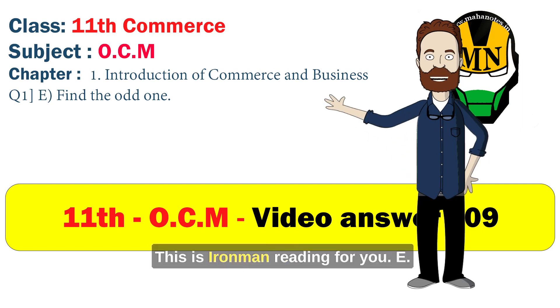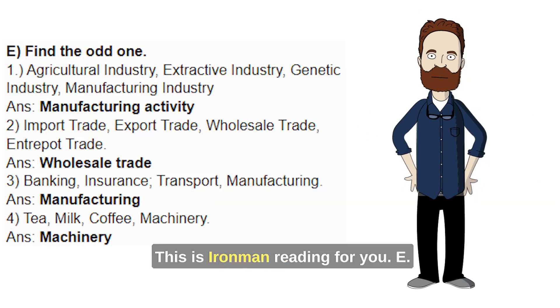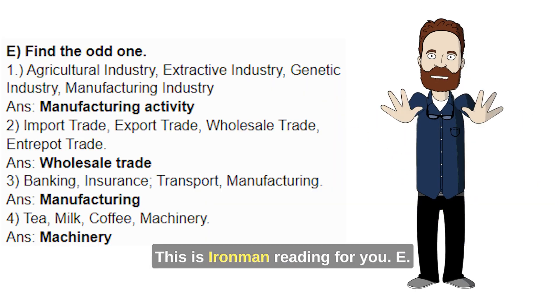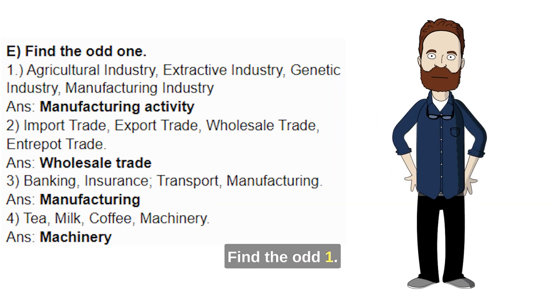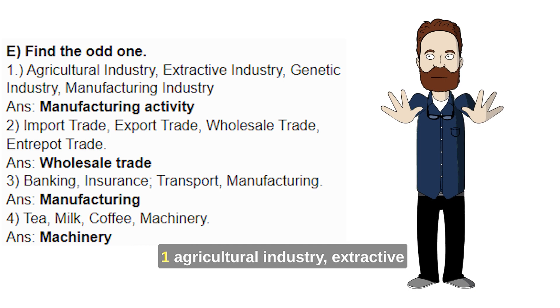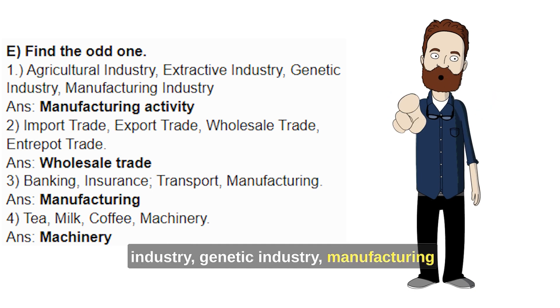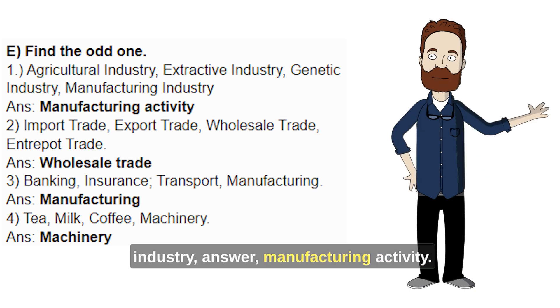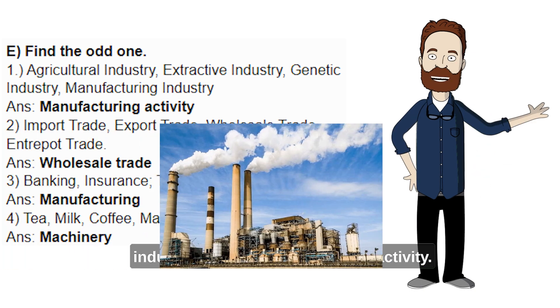Hey, this is Iron Man reading for you. Find the odd one. 1. Agricultural industry, extractive industry, genetic industry, manufacturing industry. Answer: manufacturing activity.